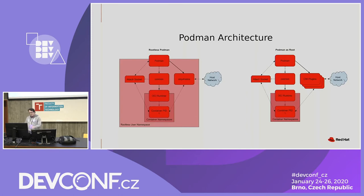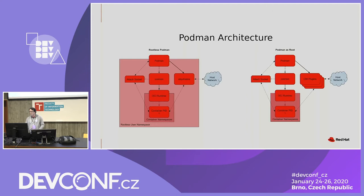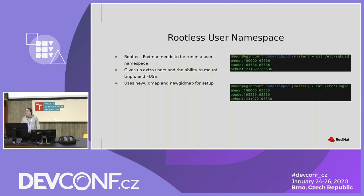I'm not going to linger on the architecture here, other than to say that everything aside from the attached socket you see over to the left is a separate process. We'll go into more detail on each of these components later, but let's just think about the differences between the root and rootless architectures, as we move on to the biggest of those differences: the rootless user namespace. This is the big box you saw around the rootless container.